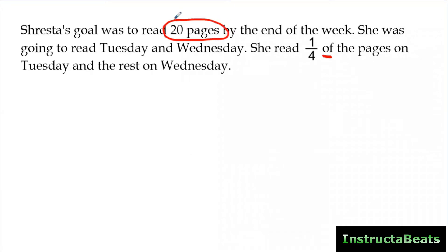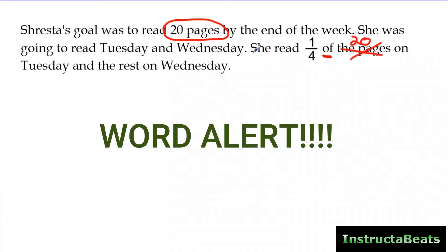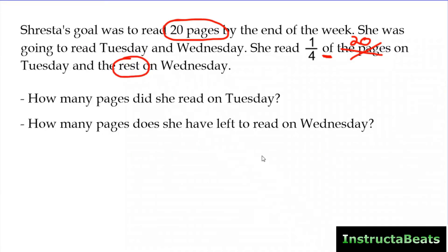Looking at this, I see right here that she read one-fourth of the pages. So the pages is information they've given me previously - she read 20 pages. So if she read one-fourth of the pages, that's really saying one-fourth of 20 on Tuesday. And then here's what they love to try to get you with this word right here, the rest on Wednesday. So looking at the information in that problem, they can ask you really two questions. They can either ask you, how many pages did she read on Tuesday, or they can ask you, how many pages does she have left to read on Wednesday?